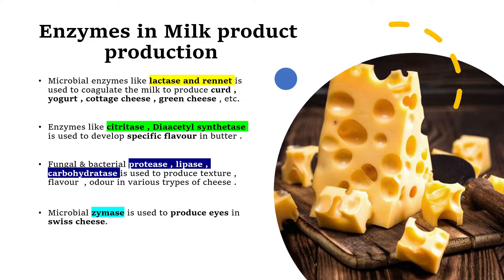Most dairy products like curd, yogurt, kefir, and cheese are produced using microbes. Microbial enzymes like lactase and rennet are used to coagulate milk to produce curd, yogurt, cottage cheese, and green cheese. Rennet attacks the 105th and 106th positions — dedicated to methionine and phenylalanine amino acids — breaking down the polypeptide structure so proteins coagulate and form a thick gel. This is the basic biochemical mechanism of curd formation using microbial enzymes like rennet.